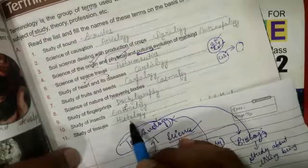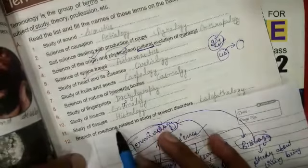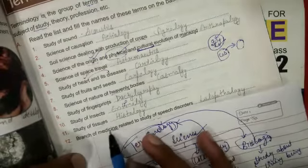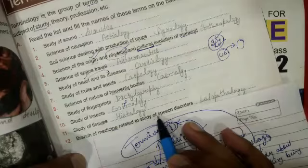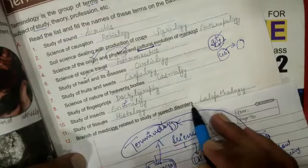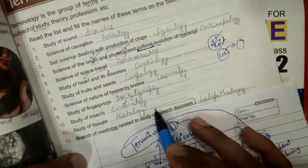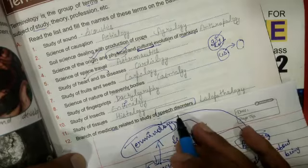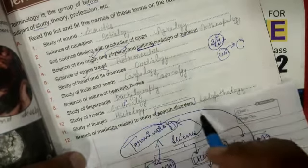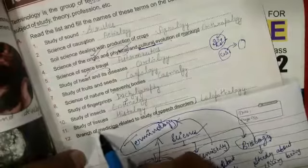Study of insects, about the insects, that is called entomology. The next one, study of tissues. Tissues means group of cells, that is called histology.